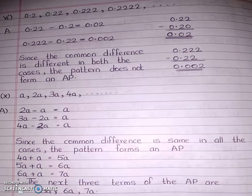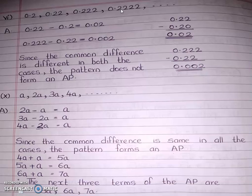Second term minus first term: 0.22 minus 0.2 equals 0.02. Next, third term minus second term: 0.222 minus 0.22 equals 0.002. Are they equal — 0.02 and 0.002? No, they are not equal. If you are not getting equal answers, there is no point in doing fourth term minus third term, so we will stop here.